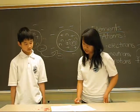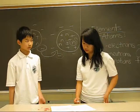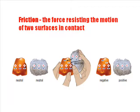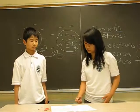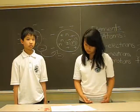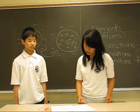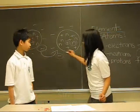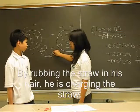One way they can get charged is through friction. Friction is the force resisting the motion of two surfaces in contact. So when two objects rub against each other, the force of friction can move electrons from one object to another.